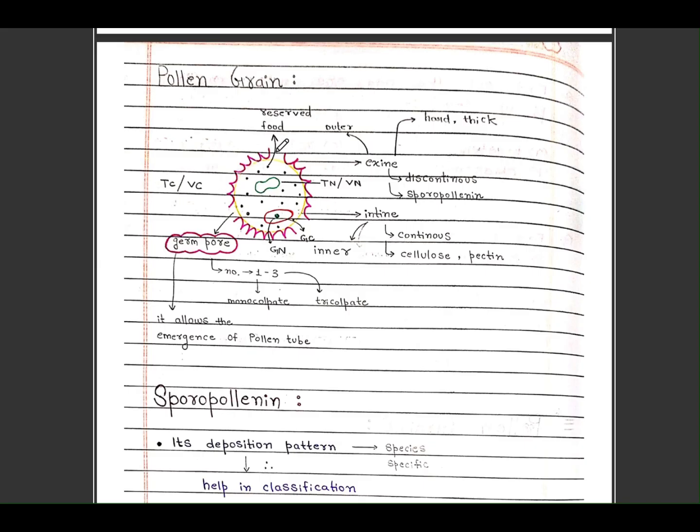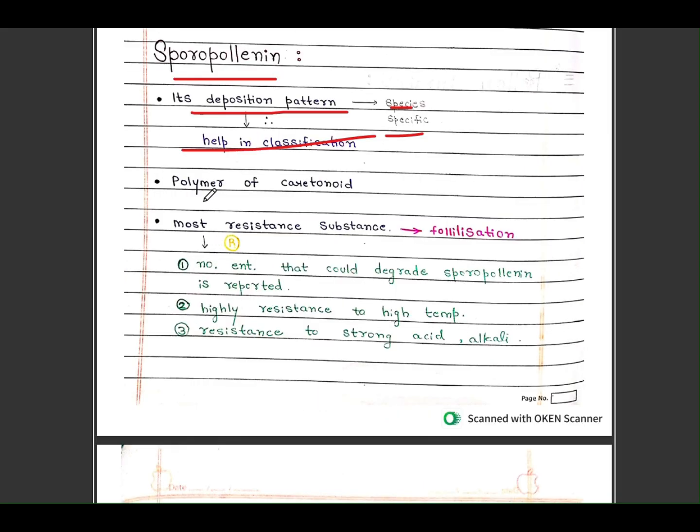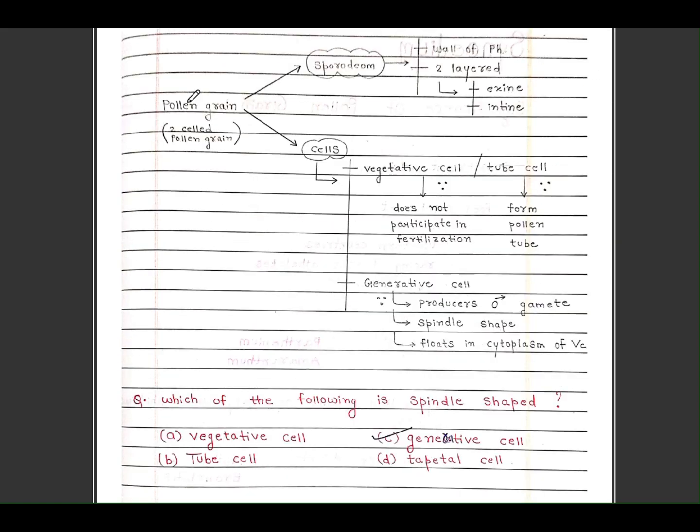Diagram of pollen grain shows reserved food, DNA, exine, intine, germ pore. Exine has deposition pattern that is species-specific and helps in classification. It contains polymer of carotenoids. Most resistant substance is sporopollenin. Sporopollenin is highly resistant to high temperature and strong alkalis. Pollen grain is divided into sporopollenin and cells: vegetative cell or tube cell and generative cell. Generative cell produces two male gametes, spindle-shaped, and floats in cytoplasm.